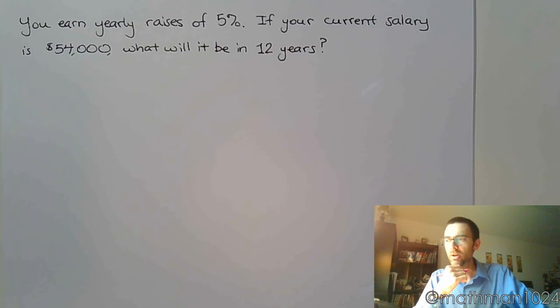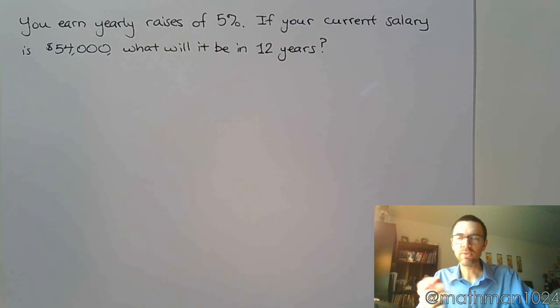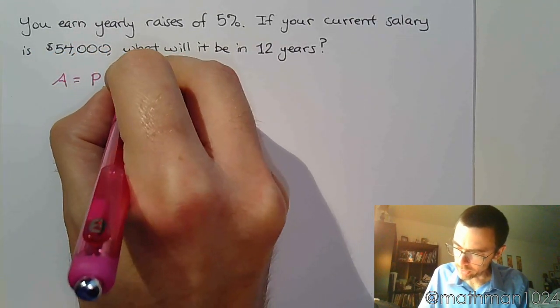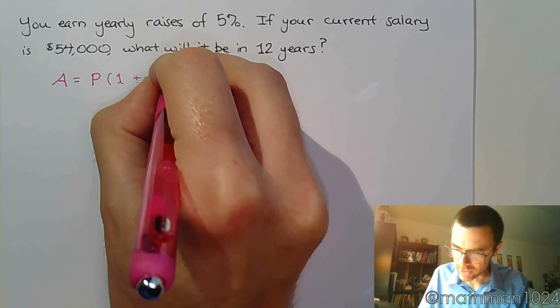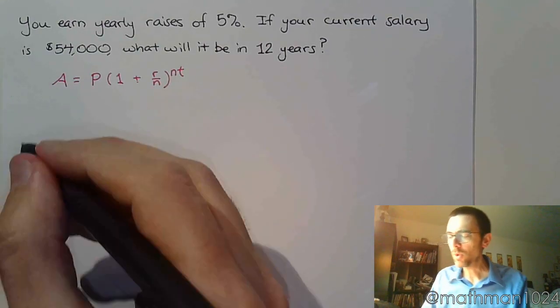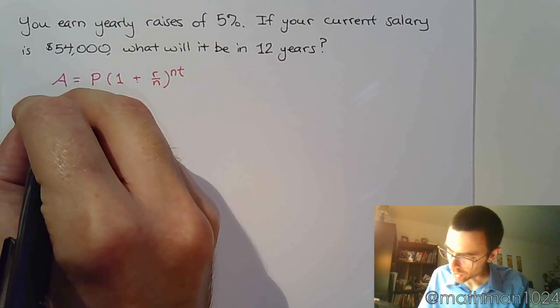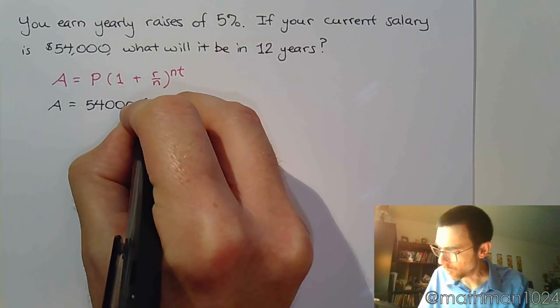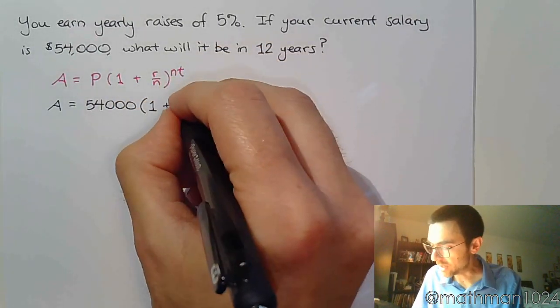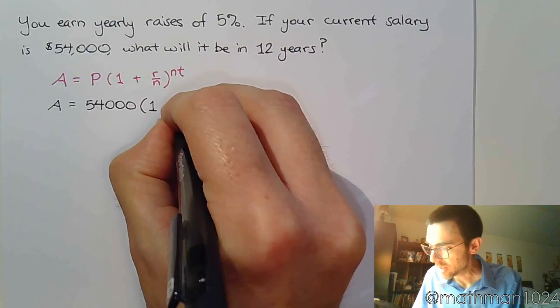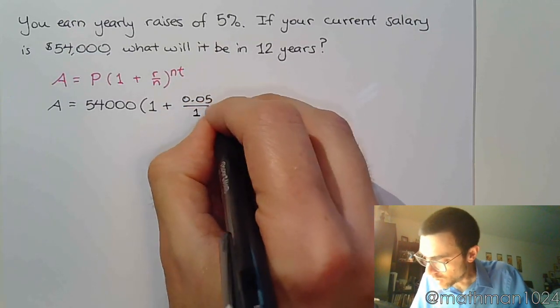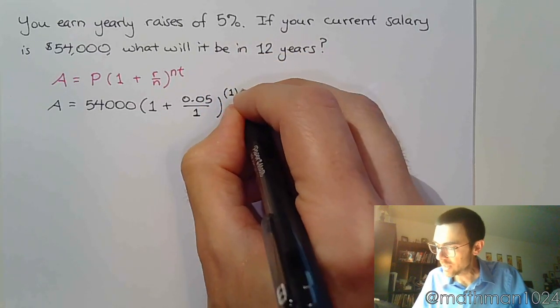You're getting a 5% growth every year. Instead of figuring out the 5% increase every year and adding it back in, doing that 12 times, you can use that same compound interest formula. We want to find our final amount, so we start with 54,000 times 1 plus our rate is 0.05, but n, this is happening once a year. Because it says yearly raises, that means your n is going to be 1, and then that's raised to 1 times t, which is 12.